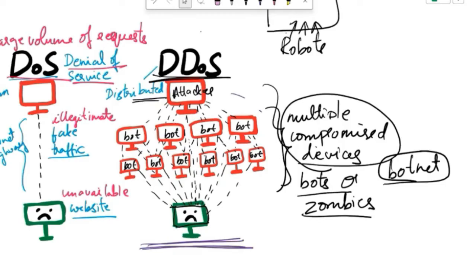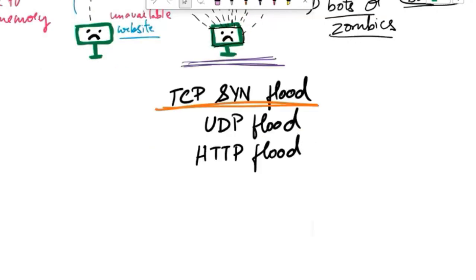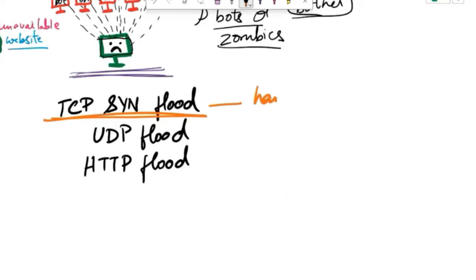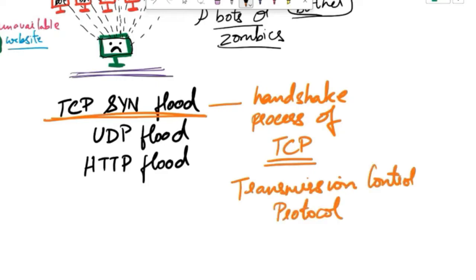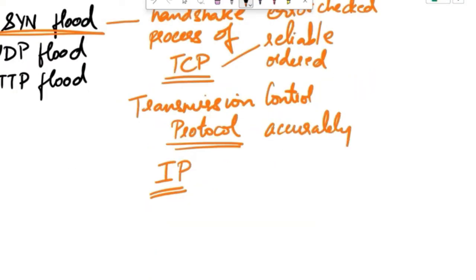There are different types of DDoS attacks like TCP SYN flood, UDP flood and HTTP flood. First let's talk about TCP SYN flood attack. This attack targets the handshake process of TCP. TCP stands for transmission control protocol. This is one of the main protocols in the internet protocol suite along with IP, that is internet protocol. TCP provides reliable, ordered and error-checked delivery of data between devices over a network.